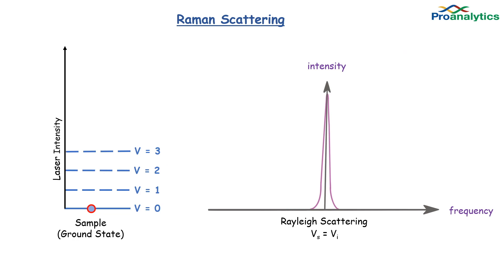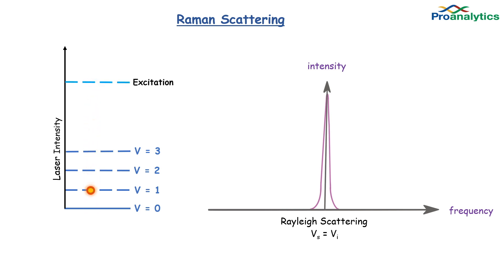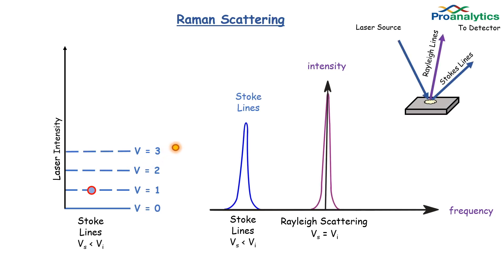The second Raman profile is when the laser strikes the sample and we've moved the vibrational energy state from the ground state to V1. The molecules are vibrating at a slightly higher energy state from their original ground state. This is called a Stokes line, where the amount of vibrational energy measured is less than the amount of energy that went into the sample — Vs is less than Vi.